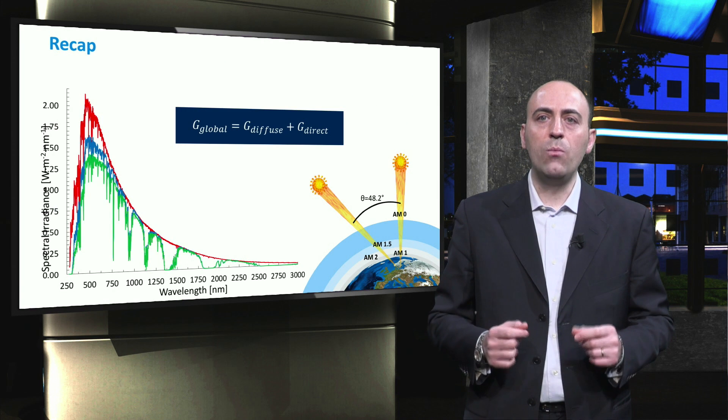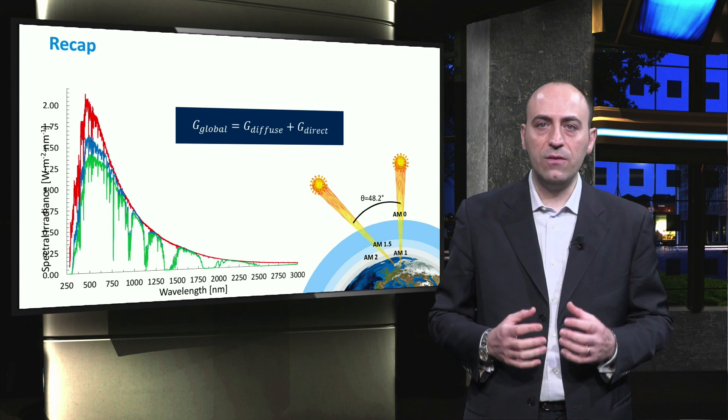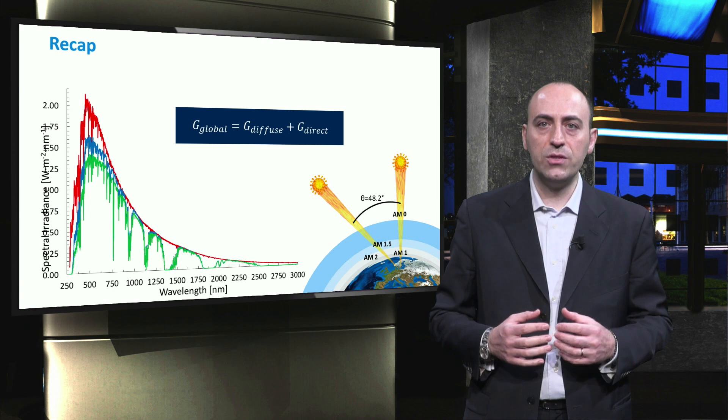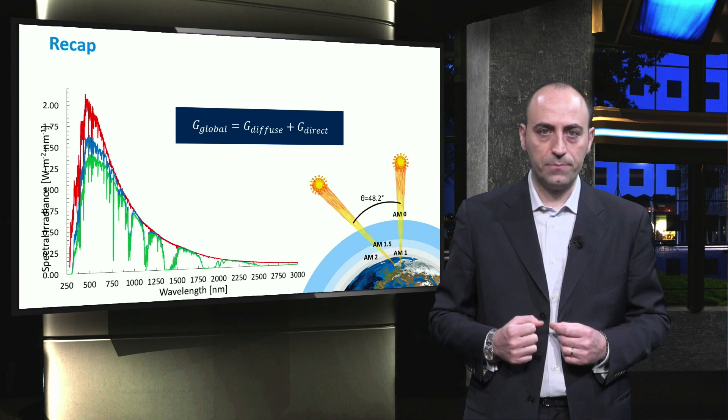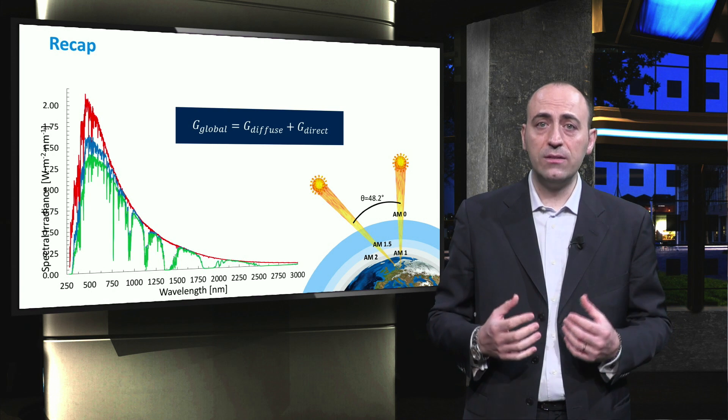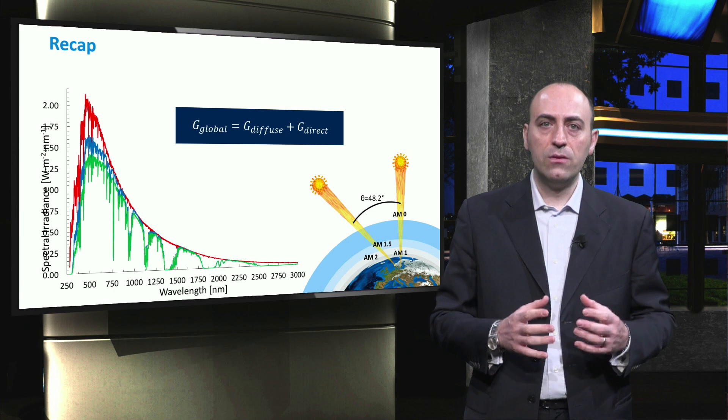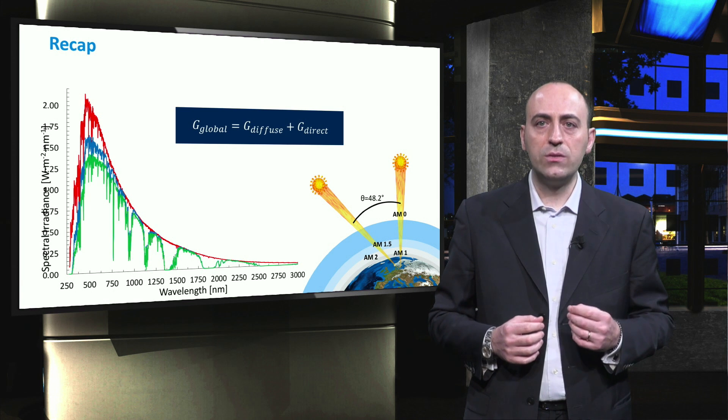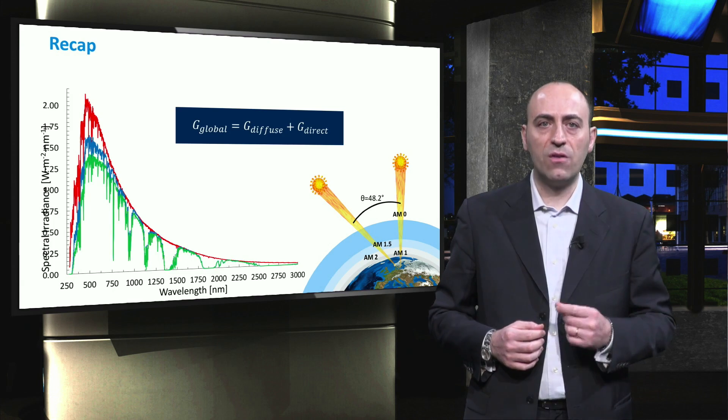To conclude, today we have seen the sun spectrum at different air masses, after having resumed the concept of air mass. Then we divided the global irradiance into two components, the direct and diffuse, and we saw how to measure them by means of pyranometers.